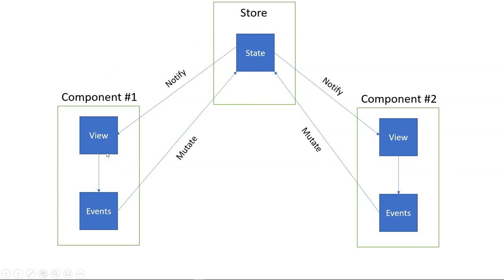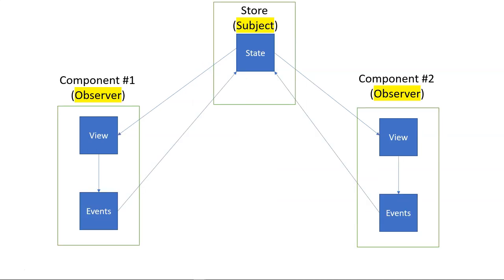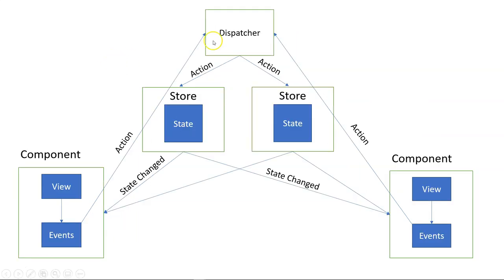This centralization is basically the observer pattern, also called the publish-subscribe pattern. Our state store is the subject and our components are the observers. But in the case where we want to modify multiple stores and update the states in multiple stores at the same time, we can't do it with this. So we have a second level of observer pattern where the stores observe the dispatcher, and the dispatcher can publish actions.